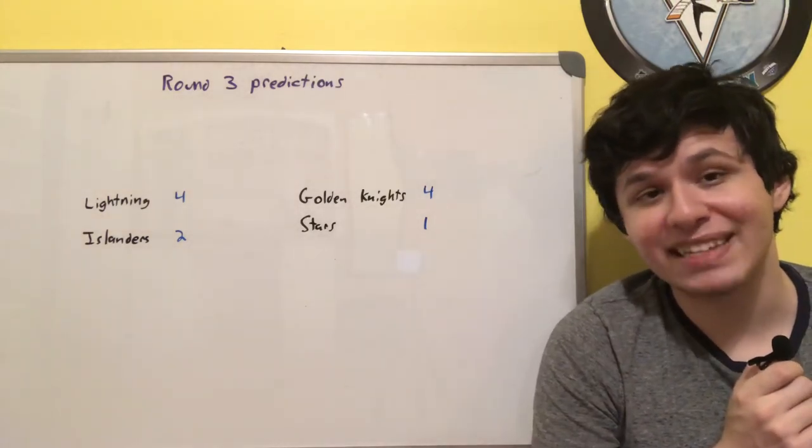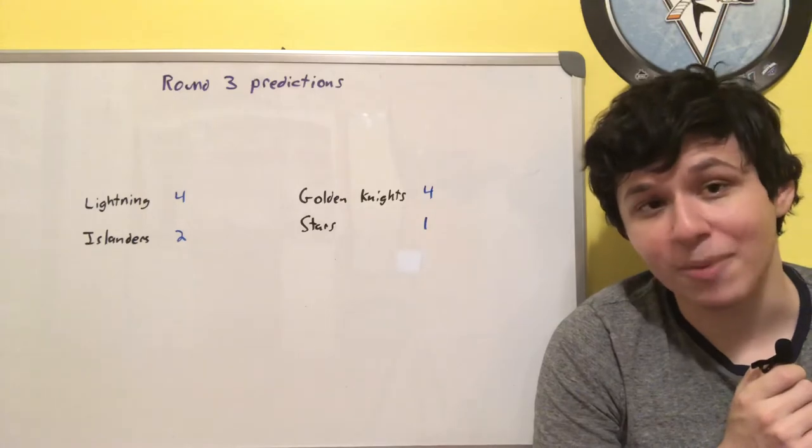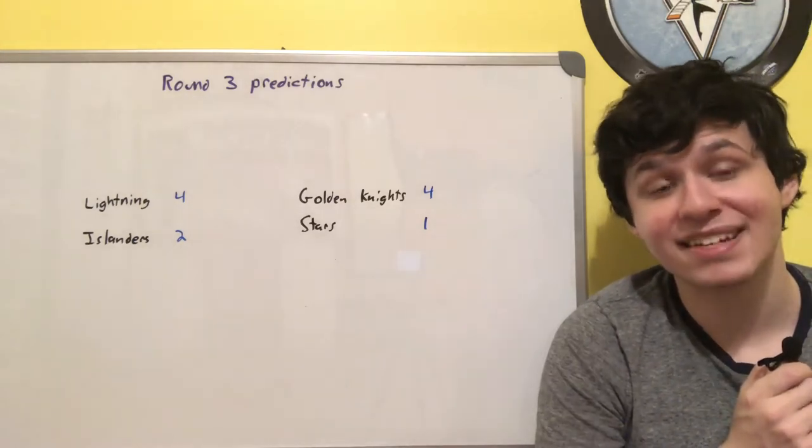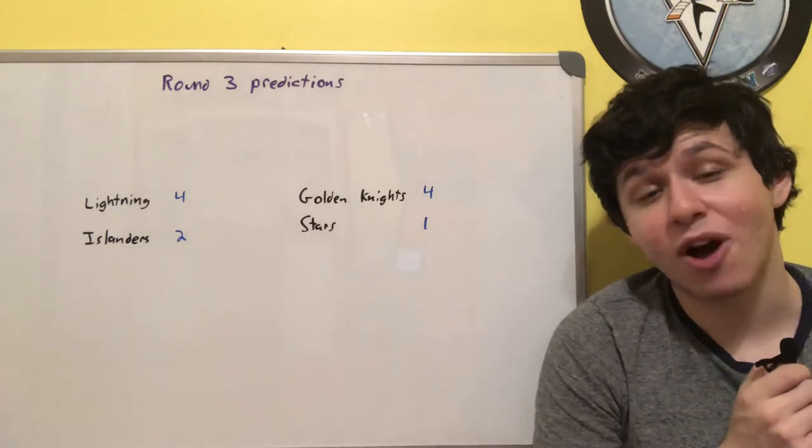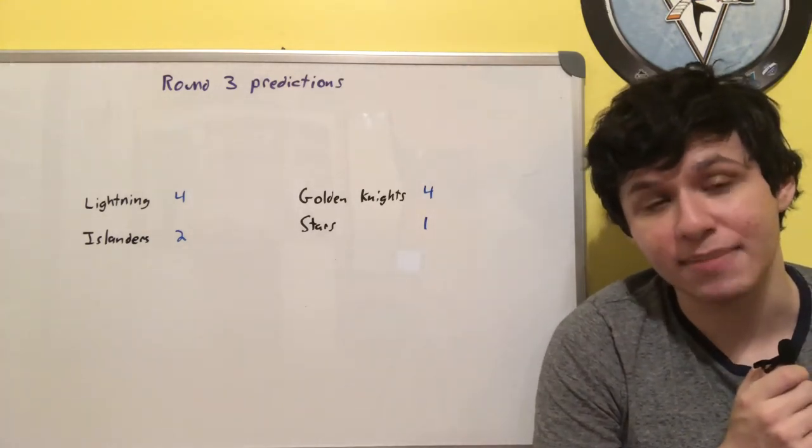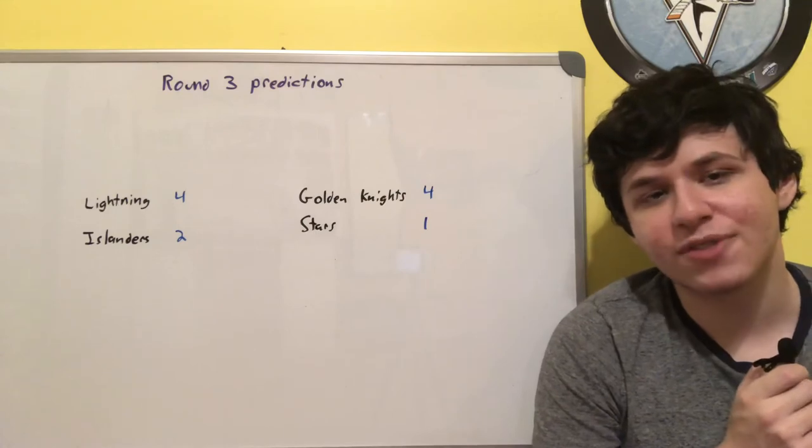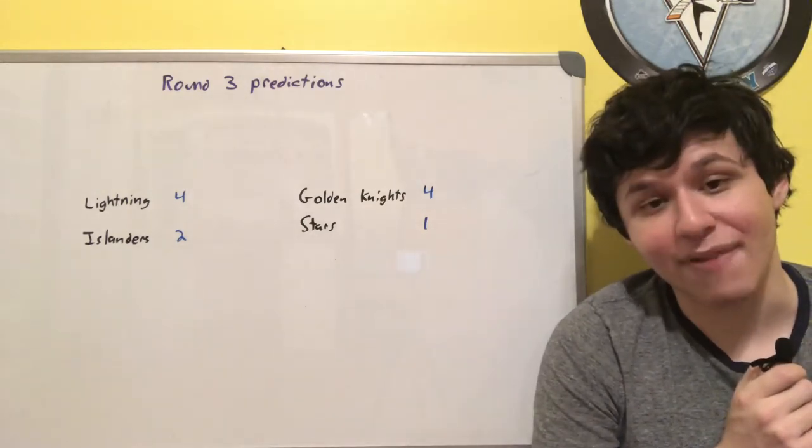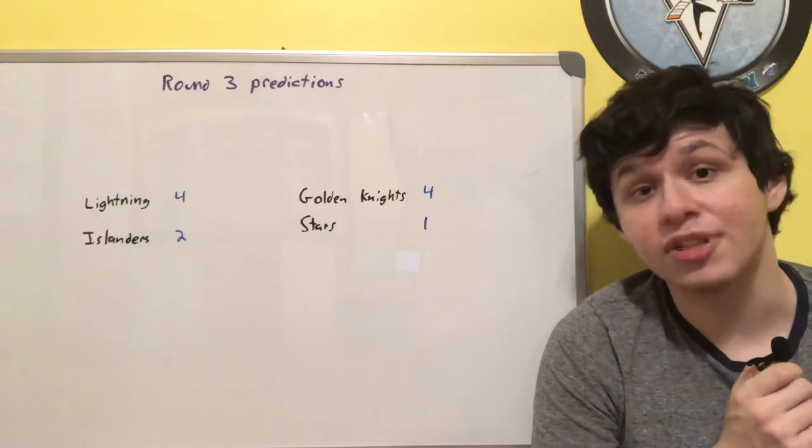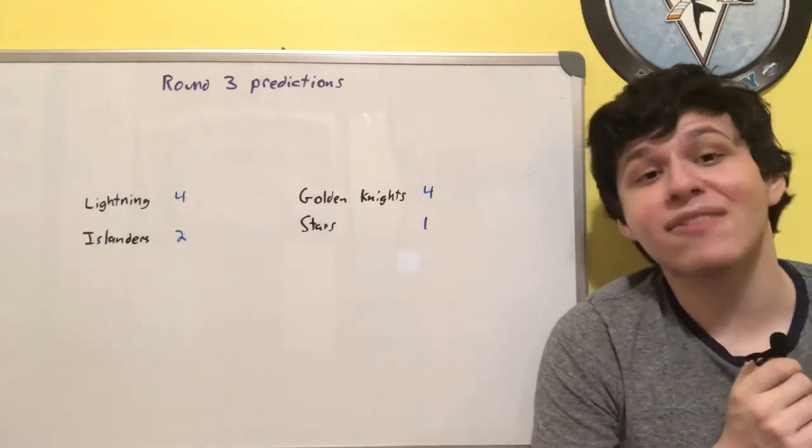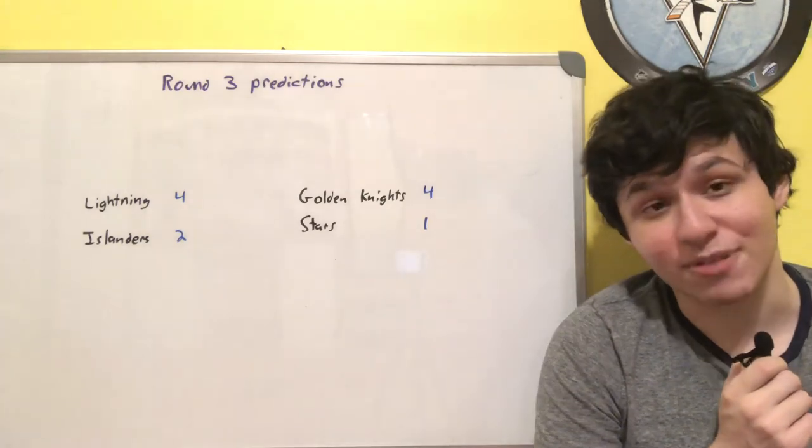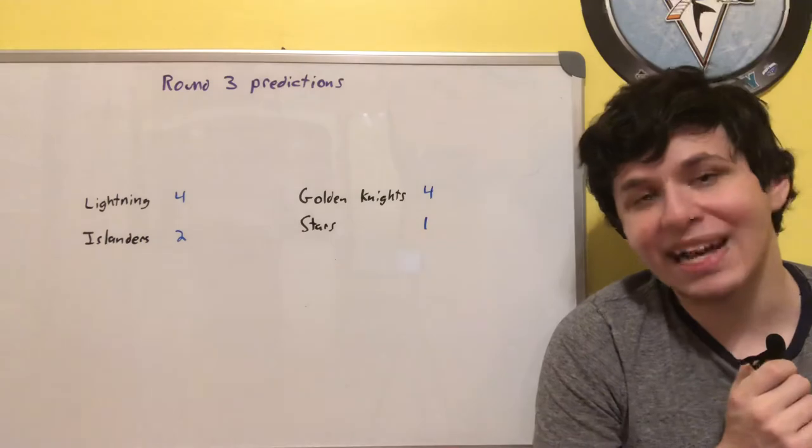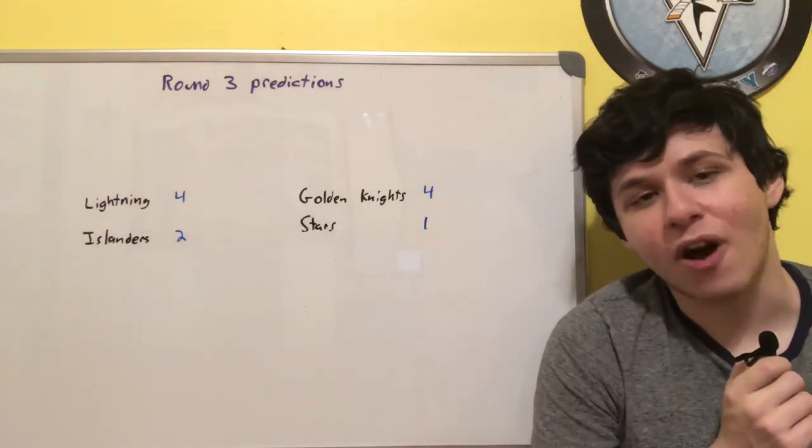The Stars on the other hand didn't have as much success during the round robin, getting the third seed. In the first round they faced off against the Flames, taking it in six, and in the second round a close series with the Colorado Avalanche, finishing them off in seven games. The reason why I have the Golden Knights over the Stars is that the Stars had a bit of trouble in that second round with the Avalanche. I thought the Avalanche were a very good team, so credit to the Stars being able to knock them off, but the Avalanche were also a very shorthanded team and the fact that this series went the distance works a bit against the Dallas Stars.